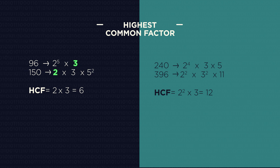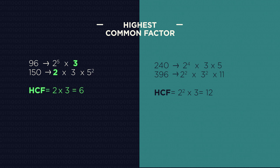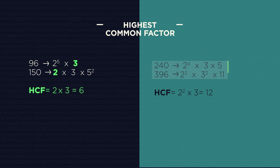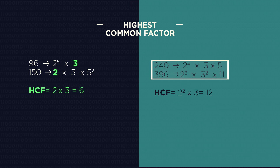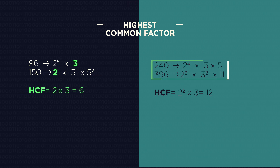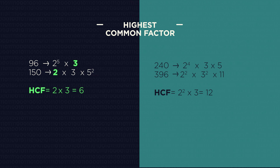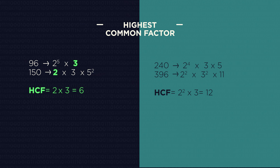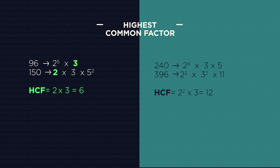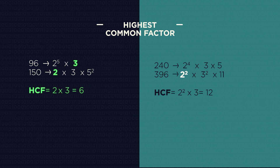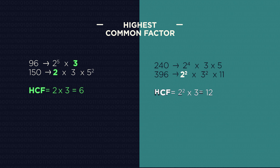So 2 multiplied by 3 is 6. The same with 240 and 396 — 240 has four 2s whereas 396 only has two 2s, so we can only take the two 2s and just the one 3.